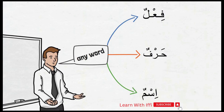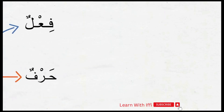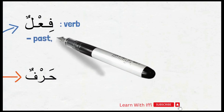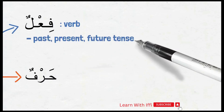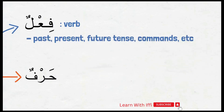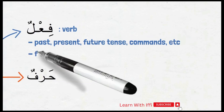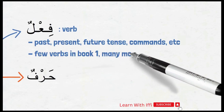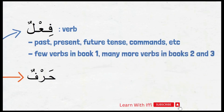The first category is fi'al. The fi'al is a verb in English. So just like in English, the fi'al in Arabic may have past, present and future tense, commands and so on. We haven't learned any verbs yet, so we are not going to worry about this type of words very much for now. We will be introduced to a few verbs in book 1 and we will learn a lot more about them in books 2 and 3 insha'Allah.